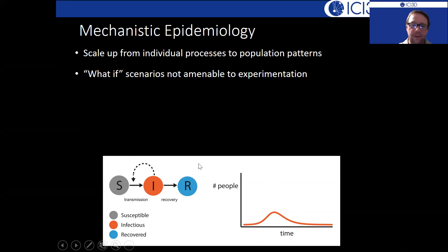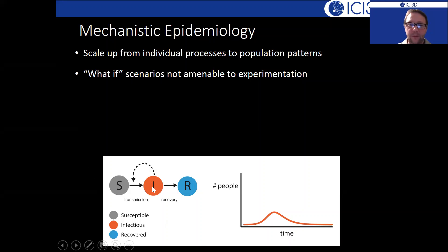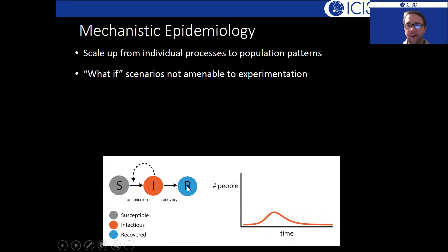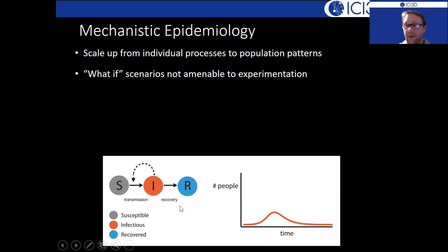For example, in an SIR model we have a system of equations that governs how people are moving between susceptible, infected, and recovered states. With this type of model we can answer questions that would be much harder to answer with traditional epidemiology, just by changing some of these parameters.